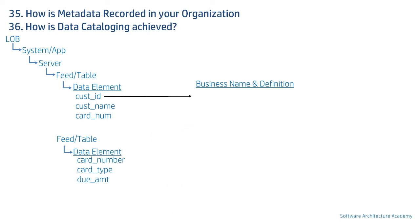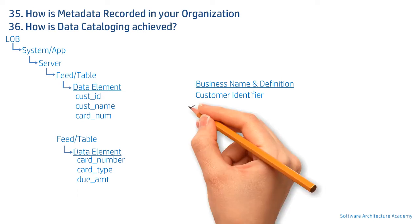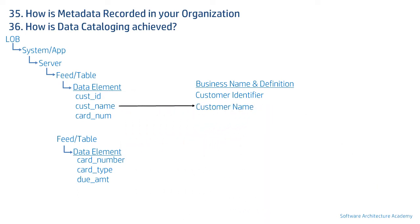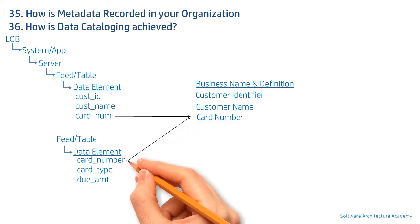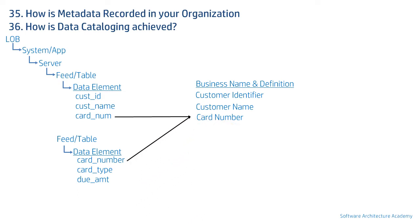For example, 'cust_id' maps to 'customer identifier' — note how short forms and underscores vanish, as business names should always be meaningful English words or phrases. Similarly, 'cust_name' becomes 'customer name' and 'card_num' becomes 'card number.' In a second table, 'card_number' holds the same data as 'card_num' as a foreign key, so it maps to the same business element. A business element to data element mapping is usually one-to-many.